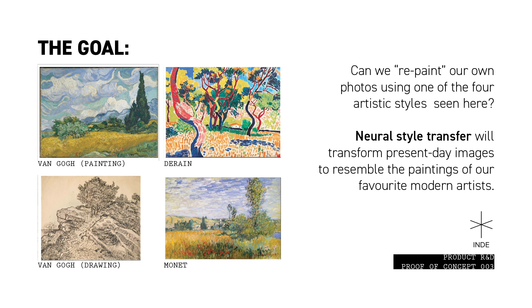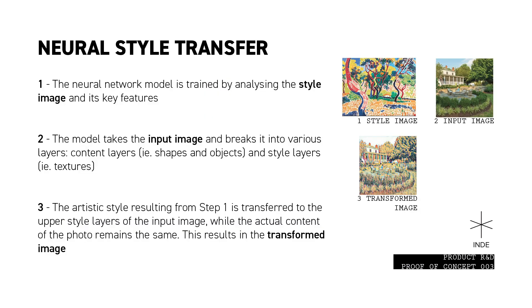Neural Style Transfer transforms the images that we feed into the model to resemble that of a famous painting. So how does it all work?